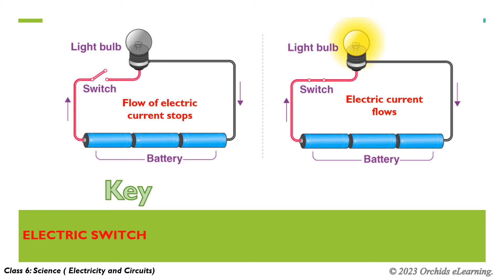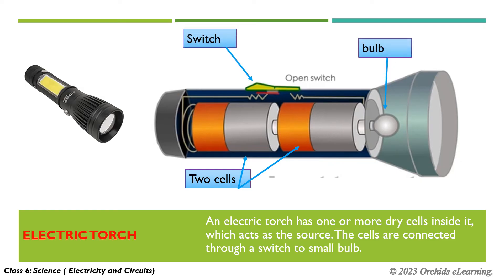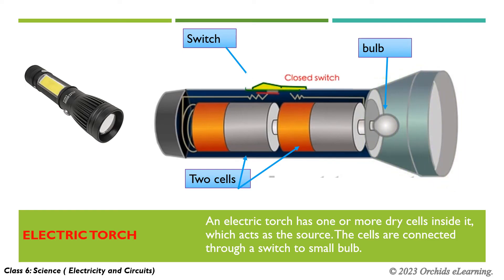An electric torch has one or more dry cells inside it, which act as the source. The cells are connected through a switch to a small bulb. When the switch is pushed to the on position, the circuit is complete and the bulb glows. When the switch is pushed to the off position, the circuit is incomplete and the light goes out.